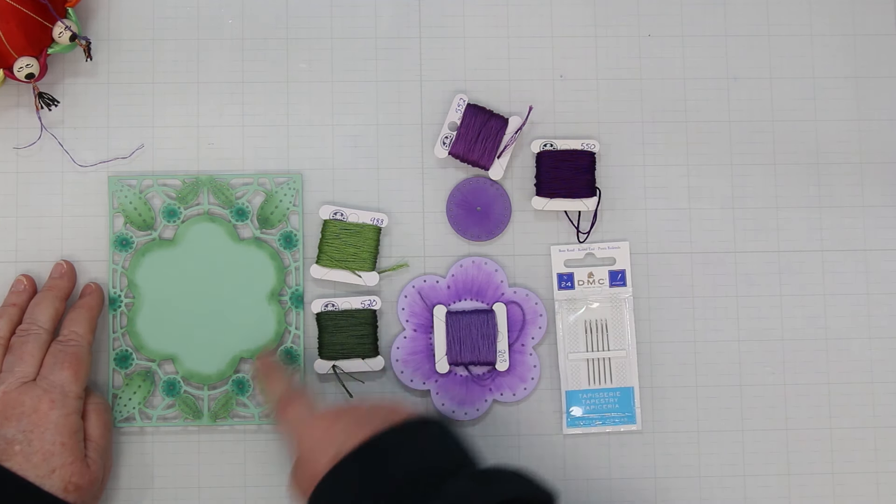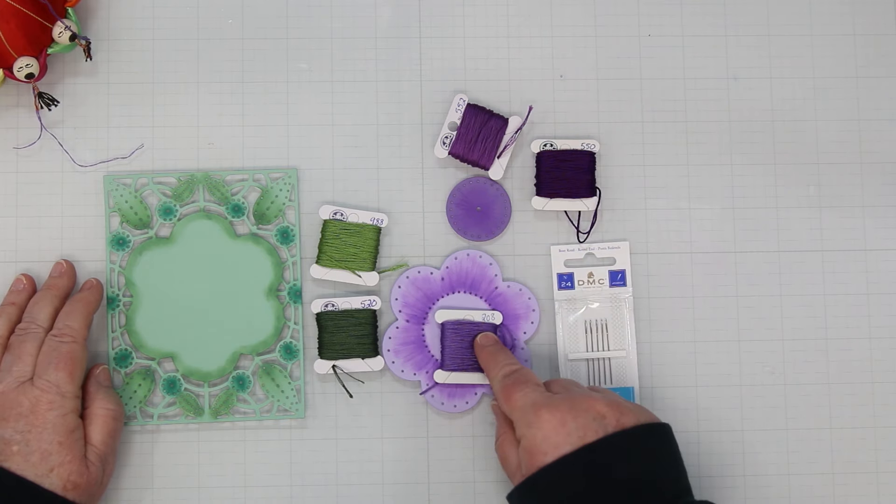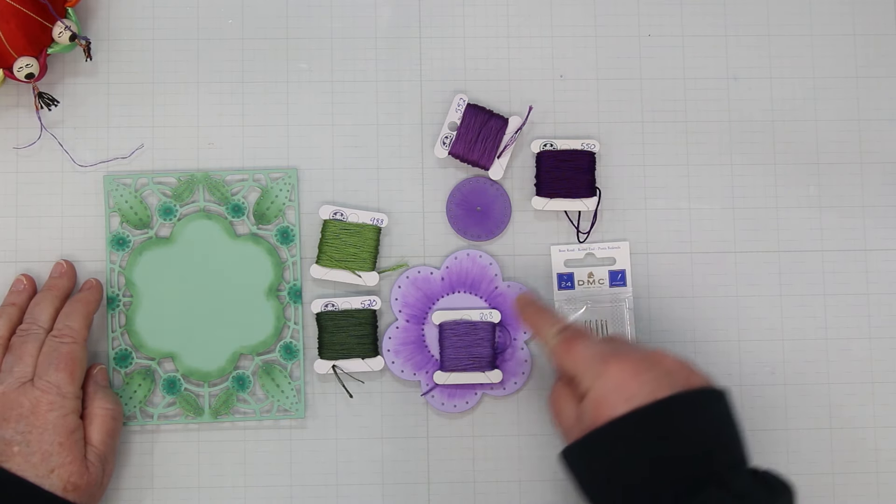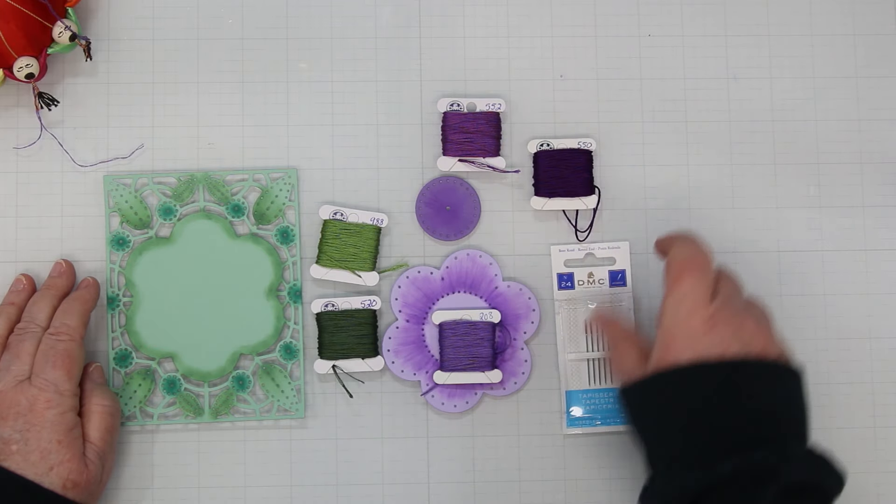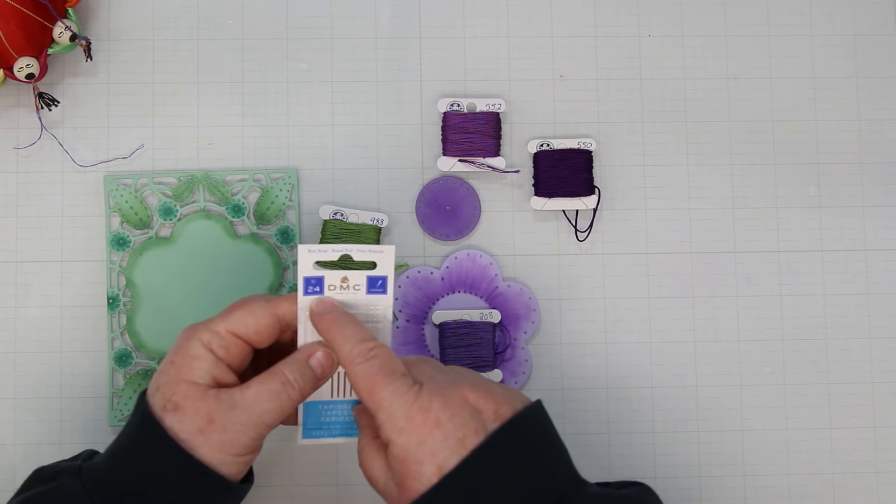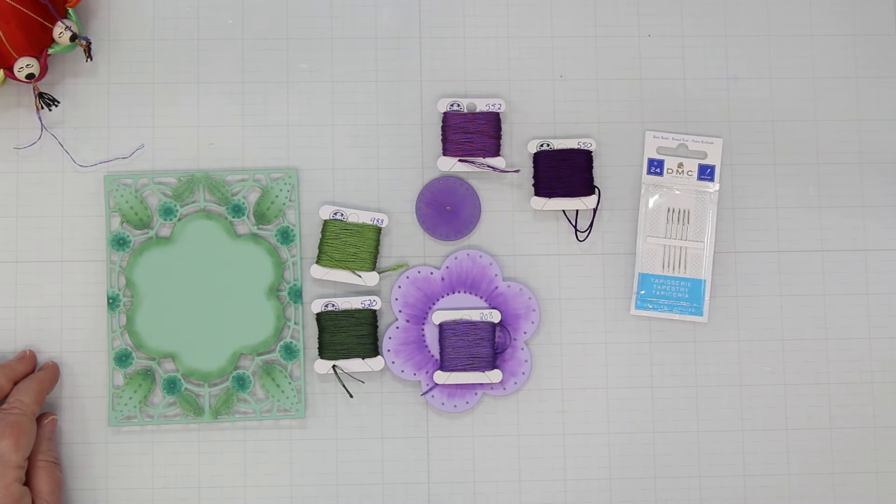For the stitching I'm going to be using DMC Cotton 552, 520, 208 and 988 and that darker purple I'm not quite sure which one I'm going to use for the small center of the flower. I'm using the number 24 needles and let's get stitching.